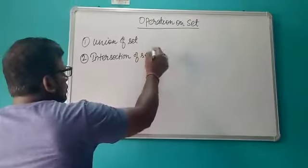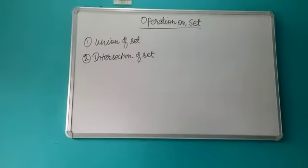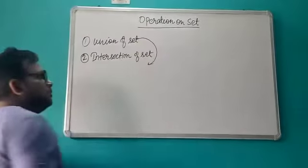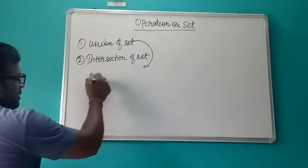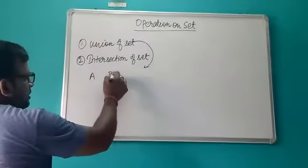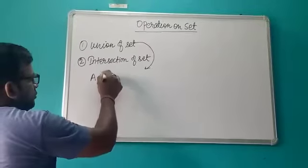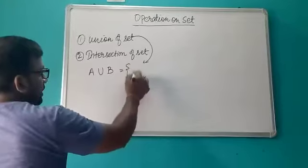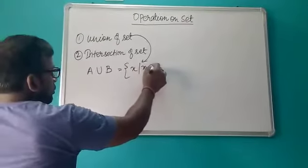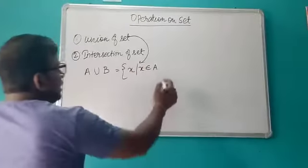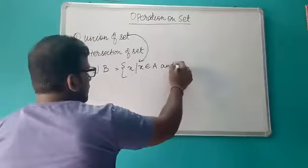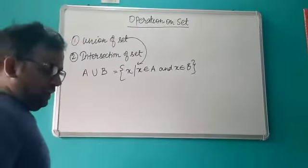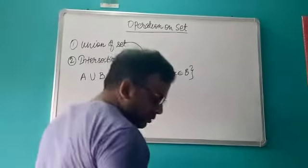What is the meaning of union of sets, and what is the meaning of intersection of sets? Suppose I have a set A and a set B. The union of sets is denoted by A union B, and it means the set of all x such that x belongs to A or x belongs to B — that means all the elements of A and B should be included.